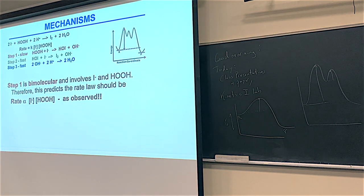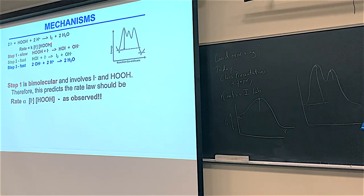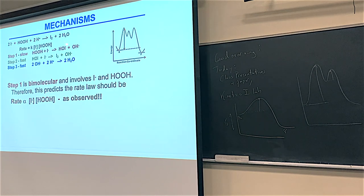Step one is bimolecular — H2O2 and iodide are coming together. If it's the slow step, our rate law should have first-order iodide and first-order H2O2. One of each coming together in the slow step. If you looked at the stoichiometry, you might think iodide was second-order and H+ was second-order, but H+ is zero-order and iodide is only first-order, because that's when the two things come together in the slow step.